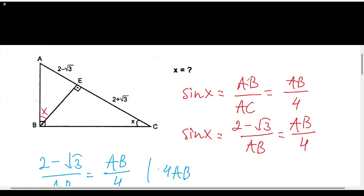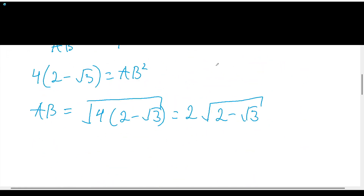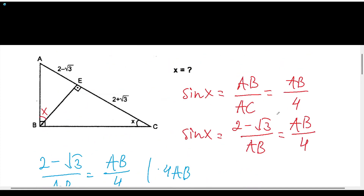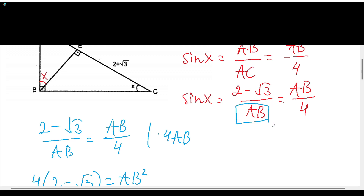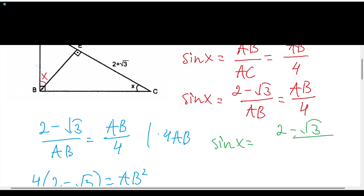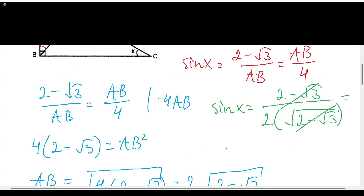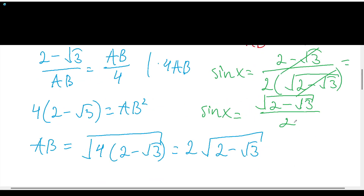The next step is to plug this value of AB back in. We plug it into the second expression and we get sine x written in another color: sine x equals (2 − √3) over 2·√(2 − √3). We can cancel terms and get sine x = √(2 − √3) / 2. And we know that this equals sine 15°.